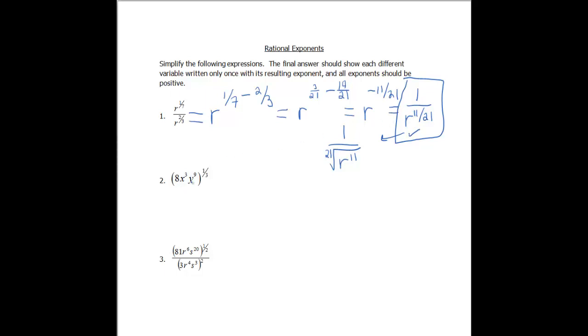Problem two. This one has some coefficients as well to deal with. So we've got 8x to the third, y to the ninth, all to the 1/3 power. So just like we did before, we need to distribute our power to all three of these pieces. So I'm gonna write this out in detail. So we have 8 to the 1/3 times x cubed to the 1/3 times y to the ninth to the 1/3.